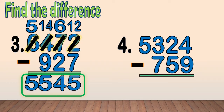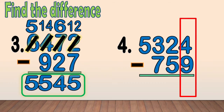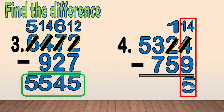Number 4: 5,324 minus 759. First, we subtract the ones: 4 minus 9. We cannot subtract 9 from 4, so we regroup 1 ten from 2. We have 14 ones. We cross out the 4 and write 14 as new ones. Now we only have 1 ten — we cross out the 2 and write 1 at the top. We subtract the ones: 14 minus 9 equals 5.